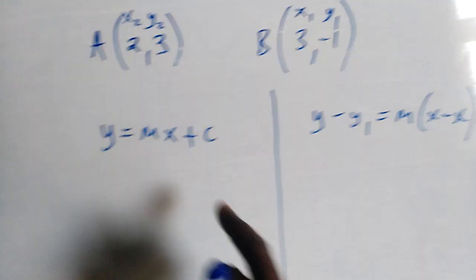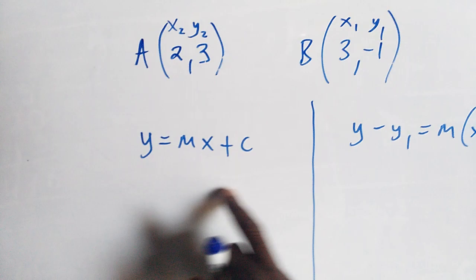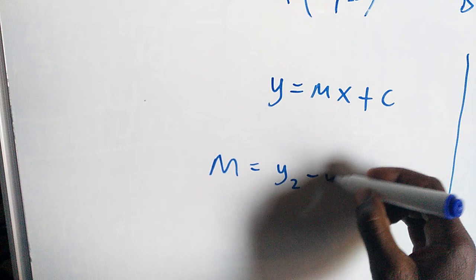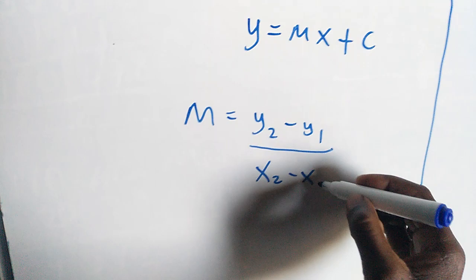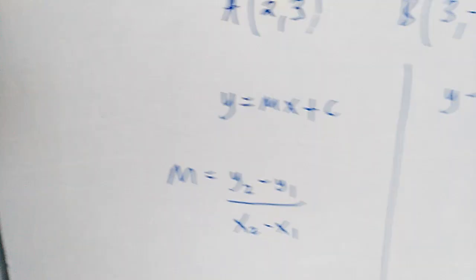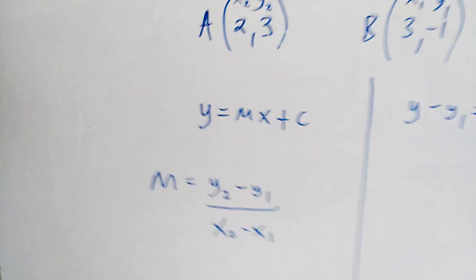We can use any of these, but first of all we need to get the gradient. Gradient formula is equal to the change in y over the change in x. Sometimes you hear people referring to the delta y over the delta x. When we go to calculus, we'll be talking about the derivative of y with respect to x. It will also be giving us the gradient of any line.